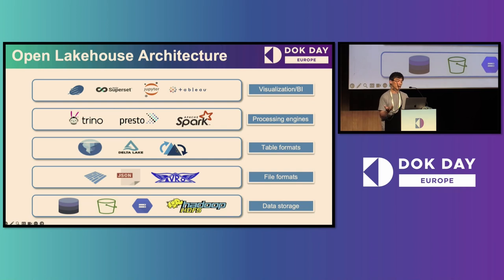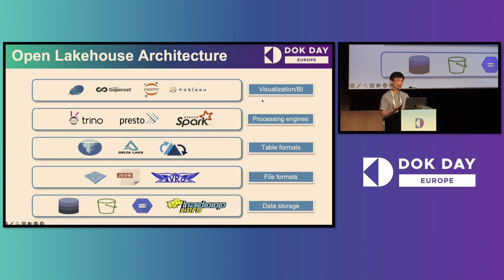Different table formats provide different features. In our solution, we use Apache Iceberg because we believe it provides more features suitable for ML usage. Above the table format is the key processing engine component — here we have Trino, Presto, and Spark. Trino and Presto are SQL engines, and Spark is more for batch processing. On top of the processing engine, you can have a bunch of open source visualization and business intelligence tools that can connect to your lakehouse for queries, data analytics, and dashboards.